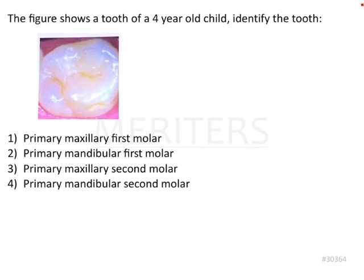The question shows a figure of a tooth from a 4-year-old child, asking us to identify it. The options are: primary maxillary first molar, primary mandibular first molar, primary maxillary second molar, and primary mandibular second molar.